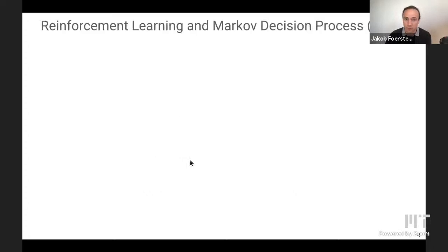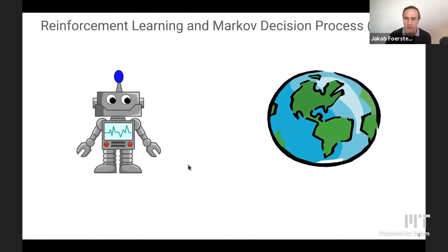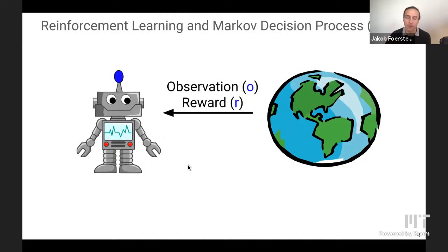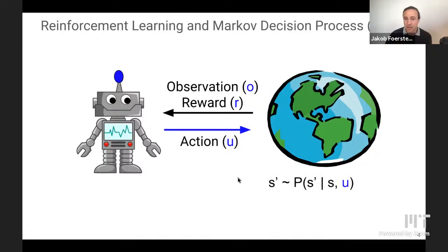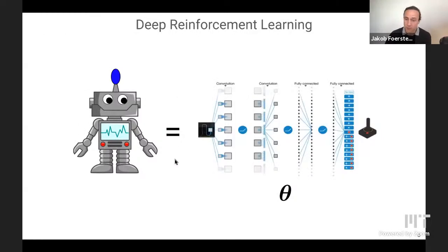Throughout this talk I'll be using the framework of reinforcement learning and the MDP. You have the environment on the right-hand side and the agent on the left-hand side. The agent obtains observations O and rewards R from the environment and takes action U. The environment transitions to a new state S prime from a distribution conditional on the previous state S and action U. Importantly, while the agent is learning, the transition dynamics are typically assumed to be static, allowing the agent to maximize the total expected discounted return per episode. I'll be using deep reinforcement learning where we represent the agent with a deep neural network mapping from high-dimensional observations to actions.